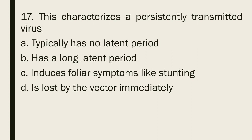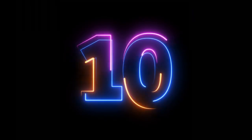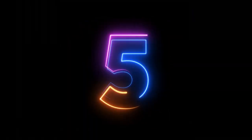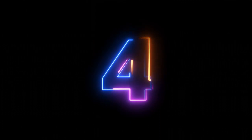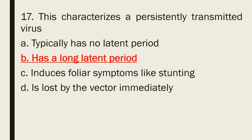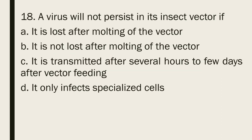Question 17: This characterizes a persistently transmitted virus: a. Typically has no latent period b. Has a long latent period c. Induces foliar symptoms like stunting d. Is lost by the vector immediately. The correct answer is letter b, has a long latent period.